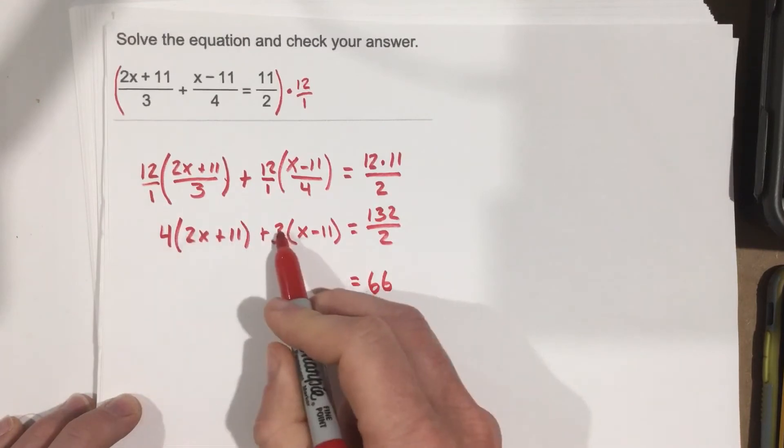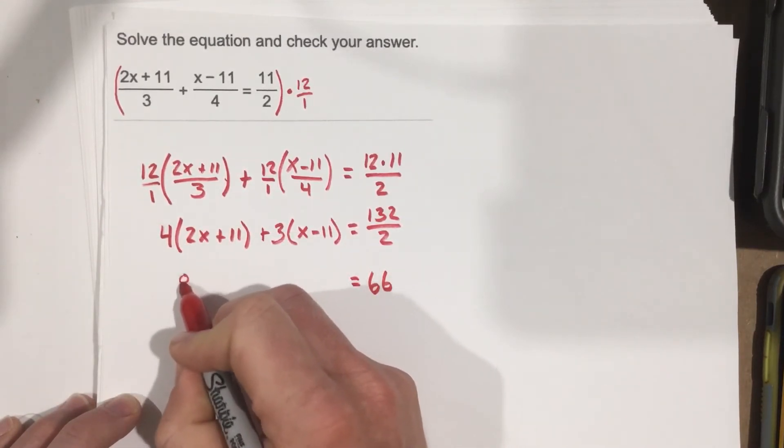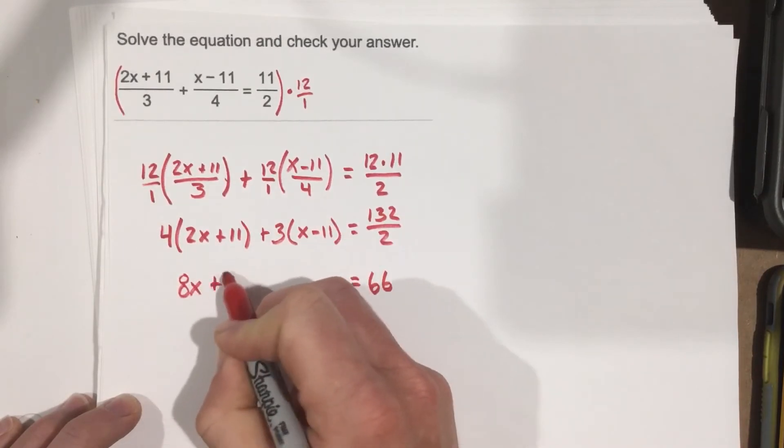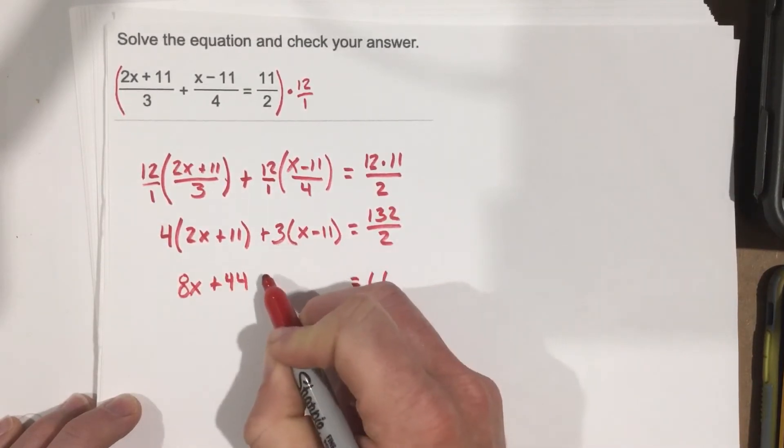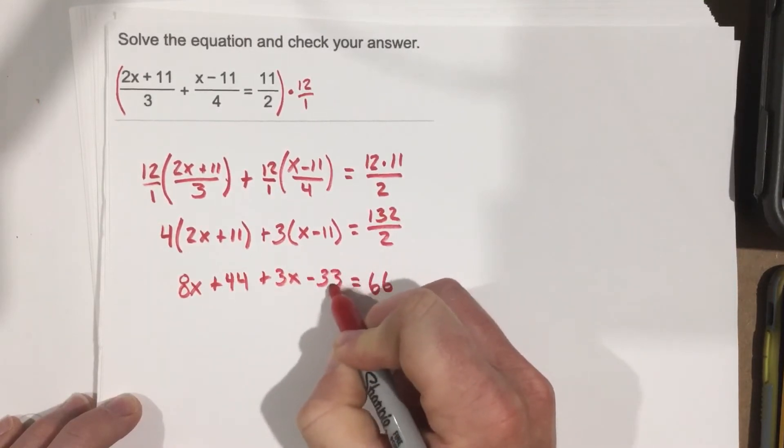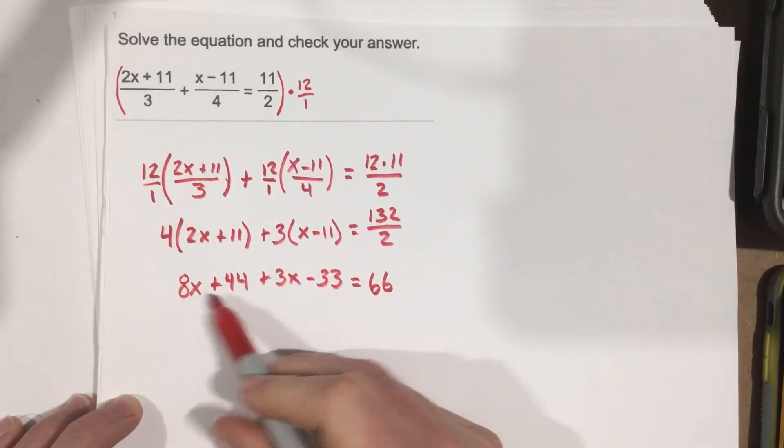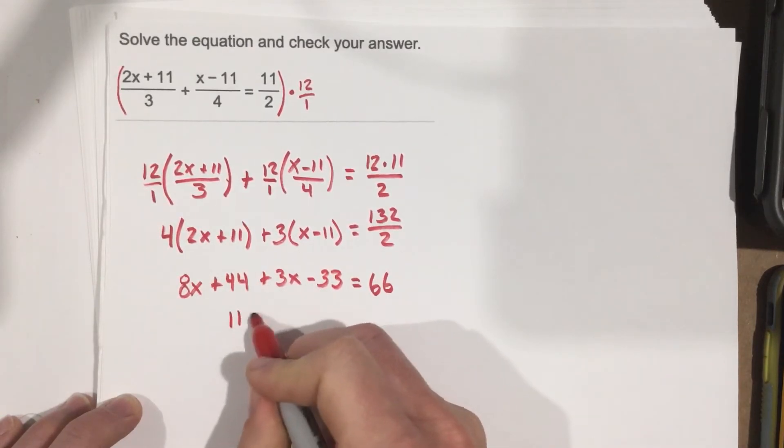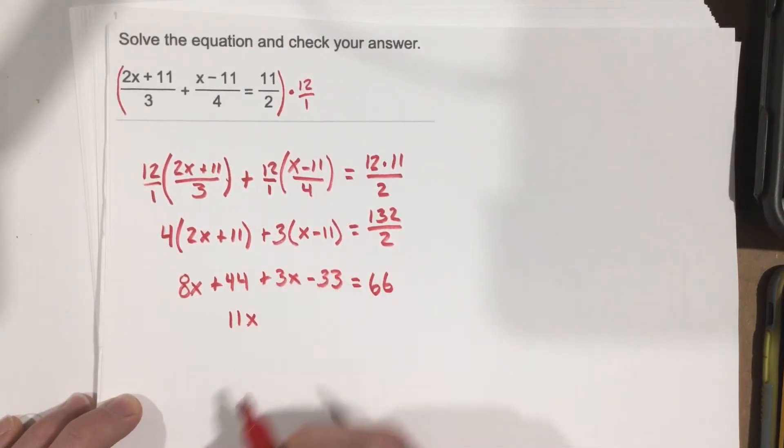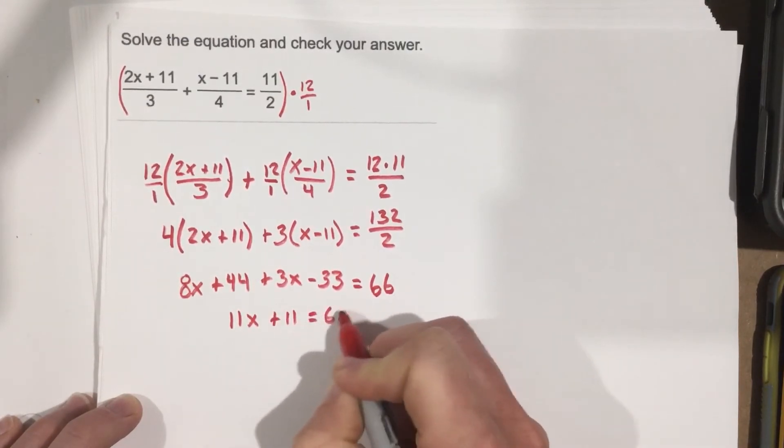Now let's use the distributive property for each of these. So we get 8x+44 plus 3x-33. We can combine like terms here. 8x and 3x is 11x, and 44 minus 33 is 11. So 11x+11 equals 66.